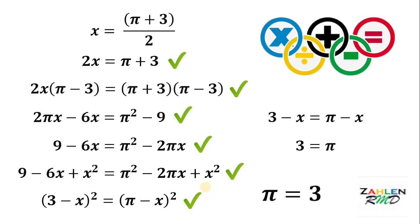Here comes the trick. If we take the square root on both sides, we get 2 possible solutions — a positive and a negative result. Therefore, the next line is not always true; it can be false. And as you can see, we have a false proof that pi is equal to 3. Now let's see why this line is incorrect.